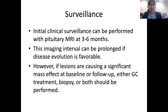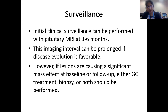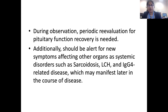Surveillance is usually done by repeat MRI at three to six months, with the imaging interval prolonged if disease resolution is favorable. However, if lesions are causing significant mass effect at baseline or follow-up, either glucocorticoid treatment, biopsy, or both should be performed. During observation, periodic evaluation of pituitary function should also be done.